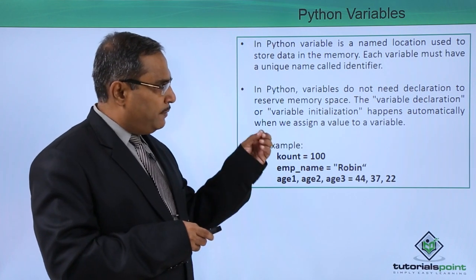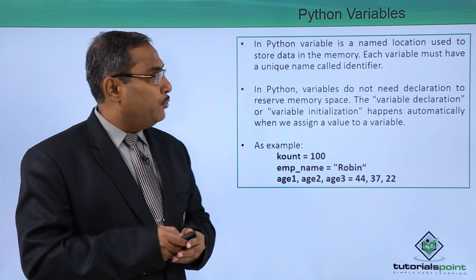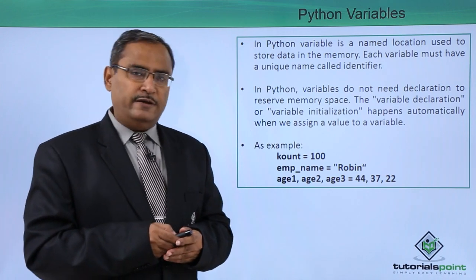In Python, a variable is a named location used to store data in the memory. Each variable must have a unique name called identifier.